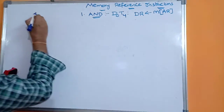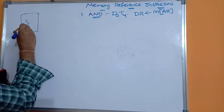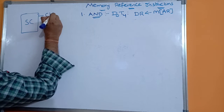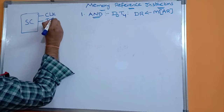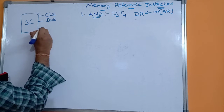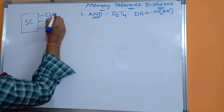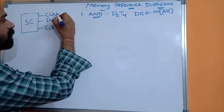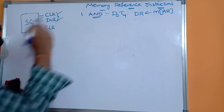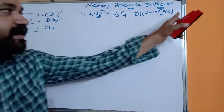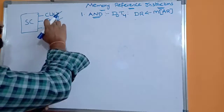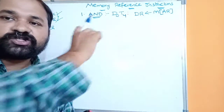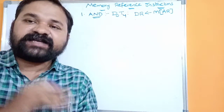We have a sequence counter on which we can apply three inputs: the first input is clock pulse, the second is increment, and the third is clear input. In each clock pulse we apply both clock pulse and the increment control input. Whenever those two are enabled, we get the next timing signal.